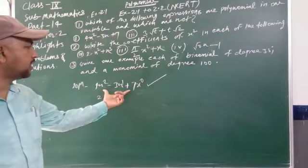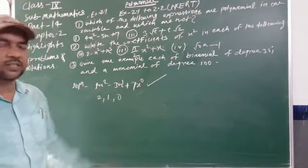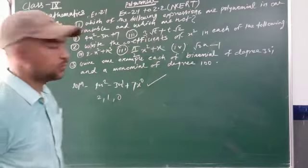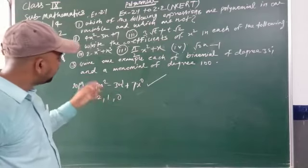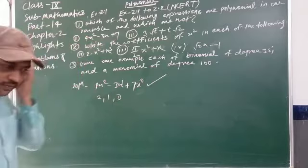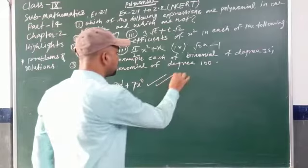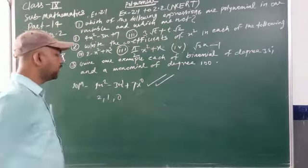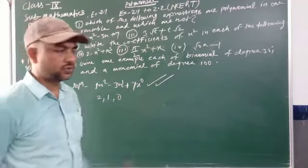The first condition is satisfied. It is a polynomial. Now the second condition is that it should be in one variable. When we look at the expression, we can see that only x is used throughout. So the given polynomial also satisfies the second condition, and the given expression is a polynomial in one variable. The first question is solved.